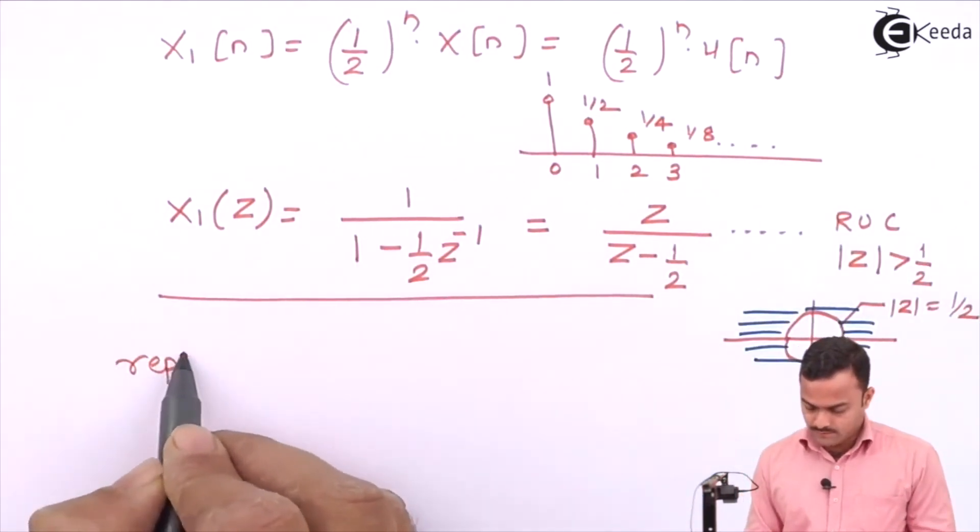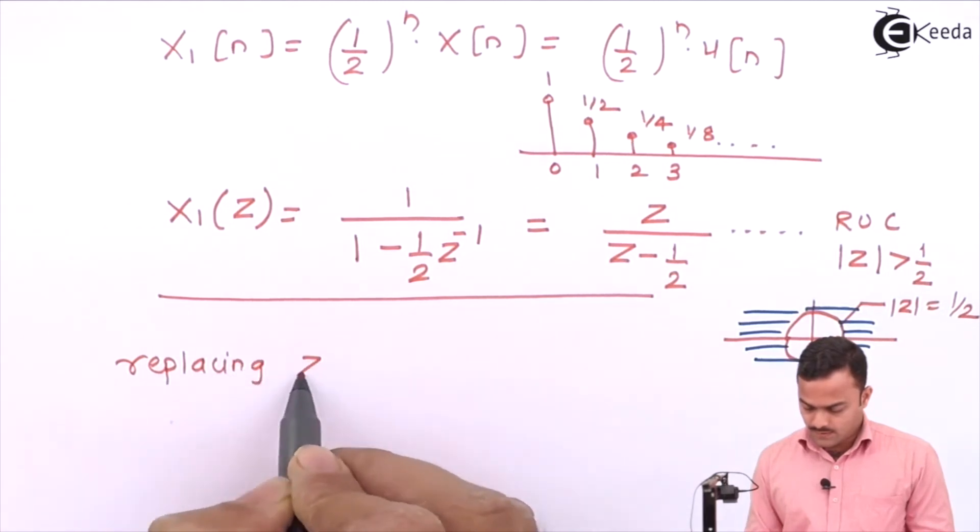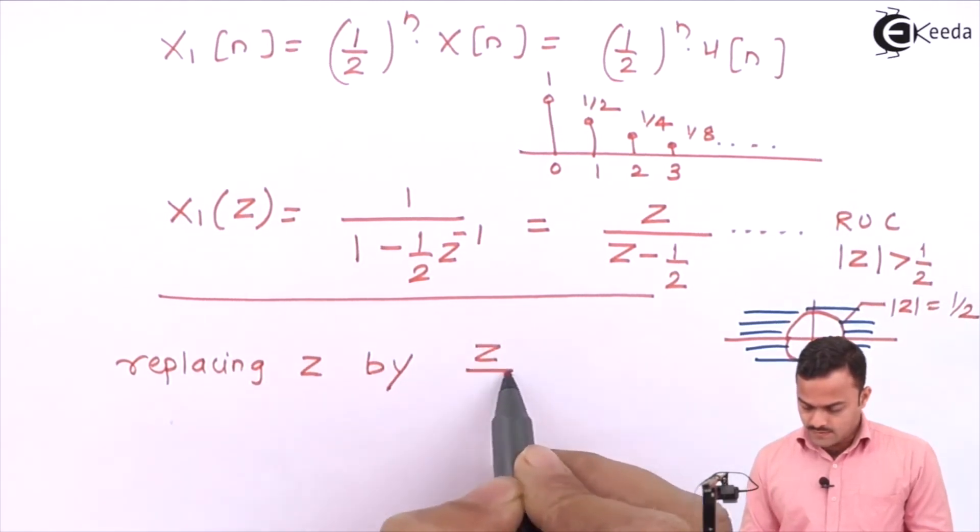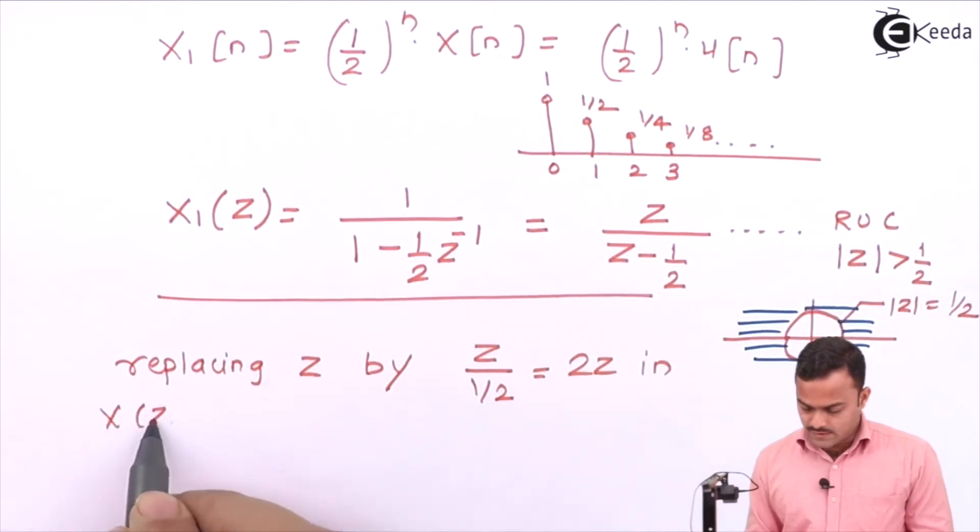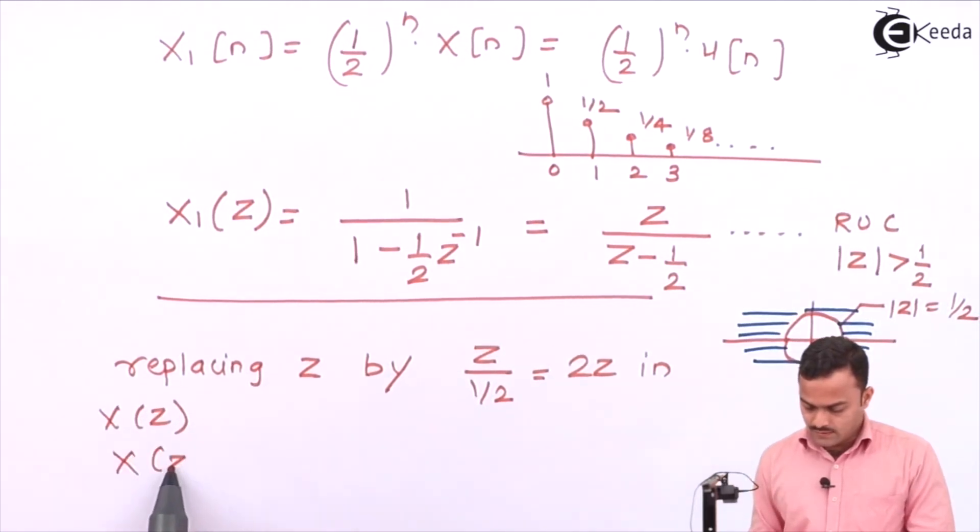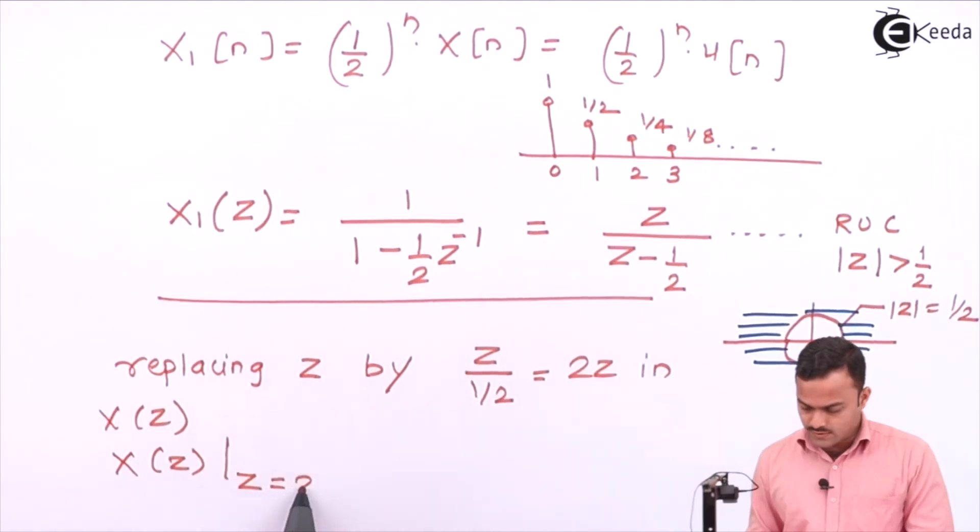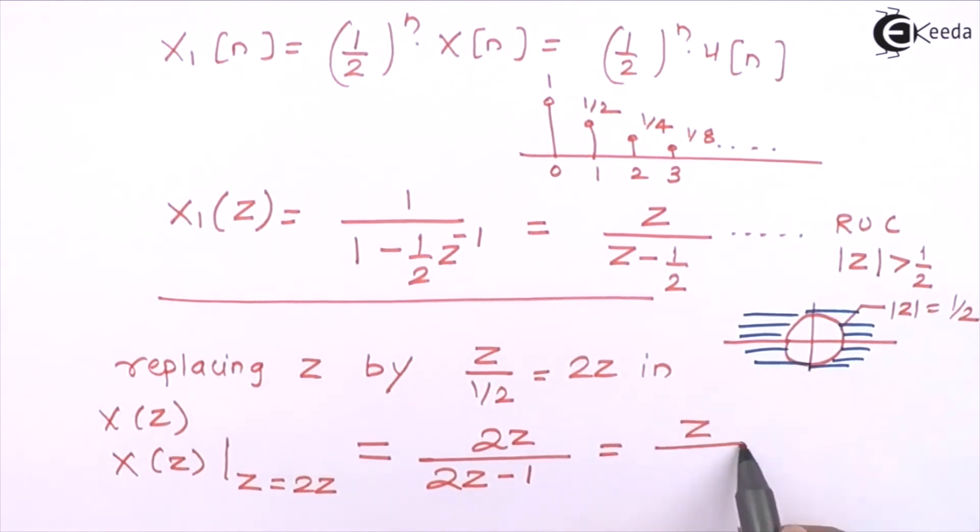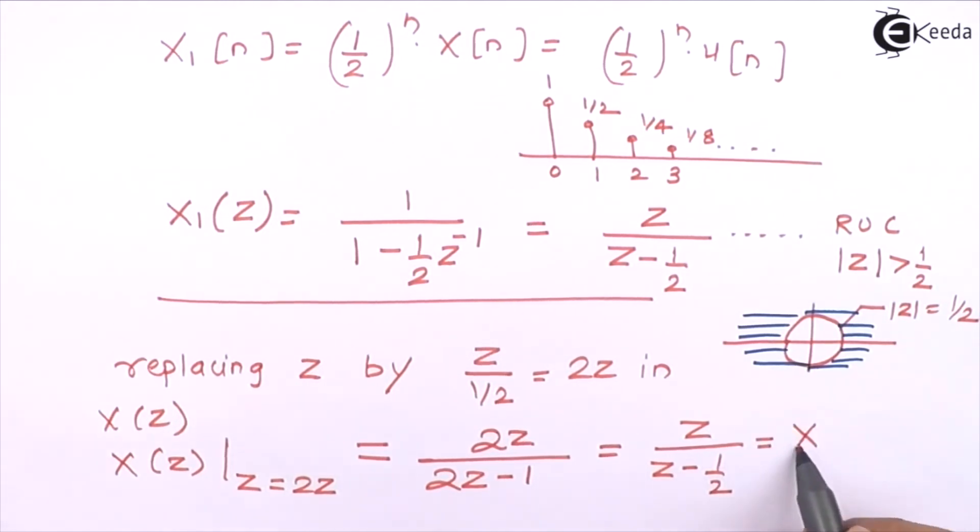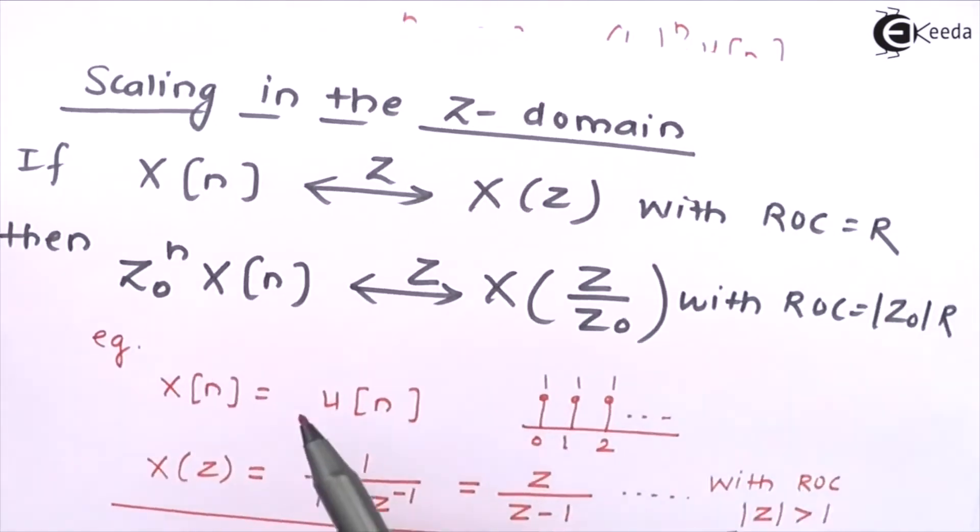Replacing Z by Z upon 1 by 2, that is nothing but 2Z in X of Z. X of Z where I put Z as 2Z is nothing but 2Z upon 2Z minus 1, which is nothing but Z upon Z minus 1 by 2, which is same as X1 of Z. I am just trying to relate these two.